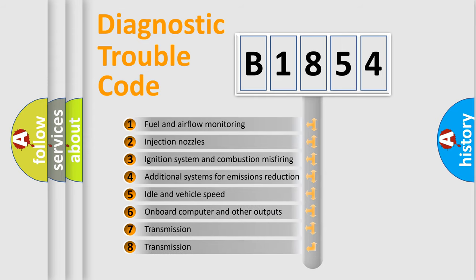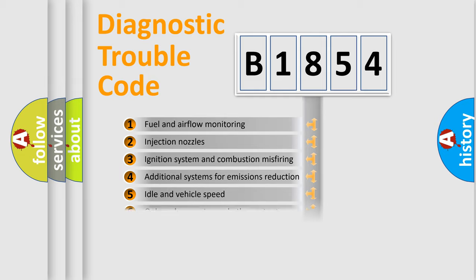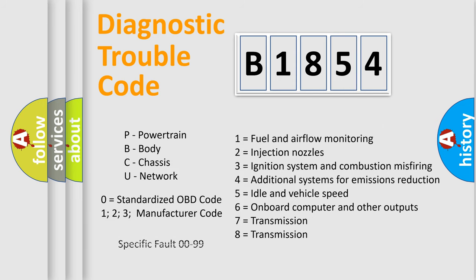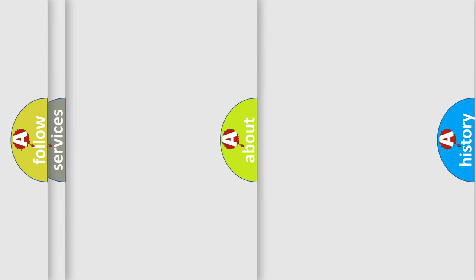The third character specifies a subset of errors. The distribution shown is valid only for the standardized DTC code. Only the last two characters define the specific fault of the group. Let's not forget that such a division is valid only if the second character code is expressed by the number zero.